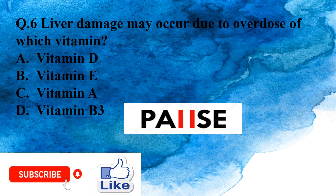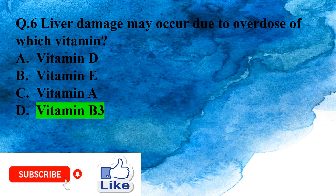Question 6: Liver damage may occur due to overdose of which vitamin? Option A: Vitamin D, Option B: Vitamin E, Option C: Vitamin A, Option D: Vitamin B3. The right answer is Option D, Vitamin B3.